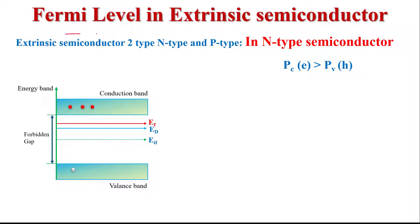Next is Fermi level in extrinsic semiconductor. The impure semiconductor material is called extrinsic semiconductor — when we add some impurity to a pure semiconductor material, that is called extrinsic semiconductor material. There are two types of extrinsic semiconductor material: N-type semiconductor material and P-type semiconductor material.